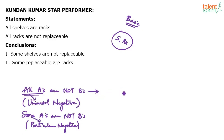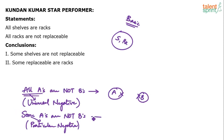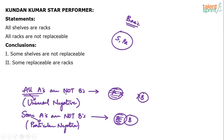How do you draw the diagram for 'all A's are not B's'? A and B should not be touching each other — no overlapping between A and B. For the particular negative 'some A's are not B's,' some outside A's are not B's. The definite conclusion from 'all A's are not B's' is: all B's are not A's, or no B is A, or no A is B. We can also say some A's are not B's and some B's are not A's. All these are correct conclusions.